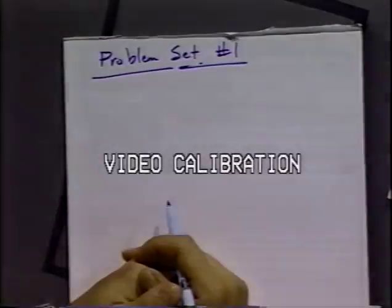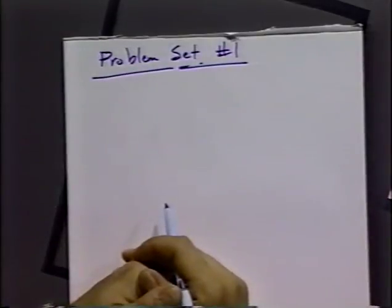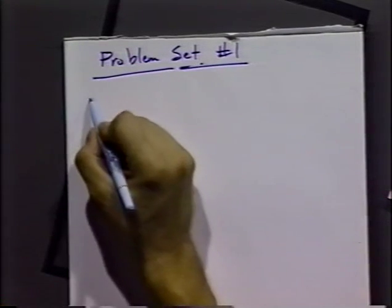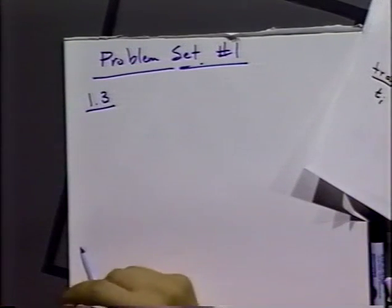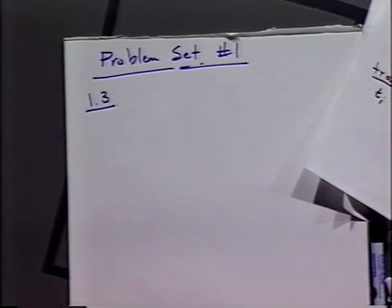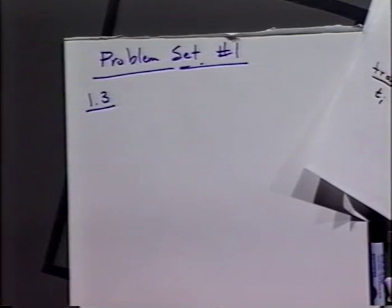We have a question from the audience about a problem they had trouble with. Number 1.3 says a solution of volume 50 cubic centimeters contains 2×10⁻³ molar iron 3+, 1×10⁻³ molar tin 4+, and 1 molar hydrochloric acid. It involves a rotating disk electrode with mass transfer coefficients. Calculate the limiting current for the reduction of iron 3+ under these conditions.